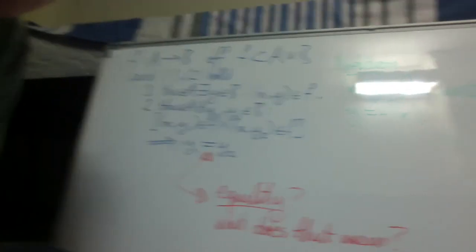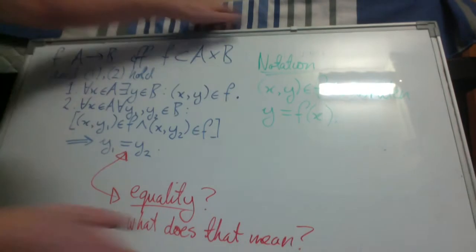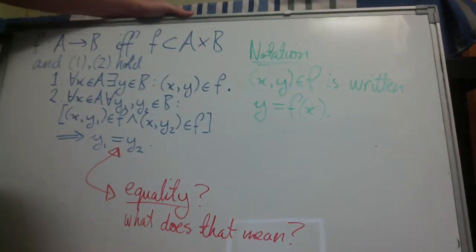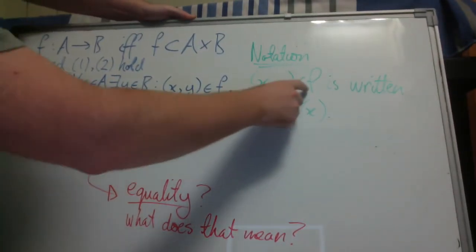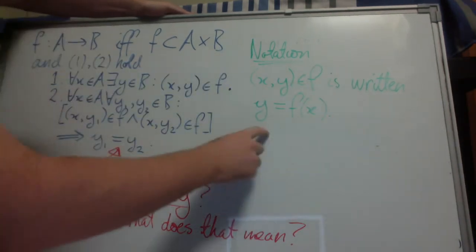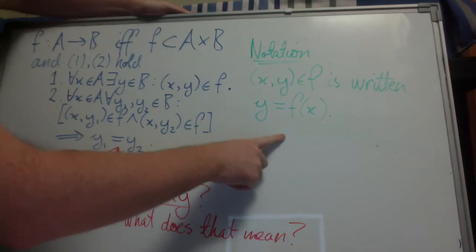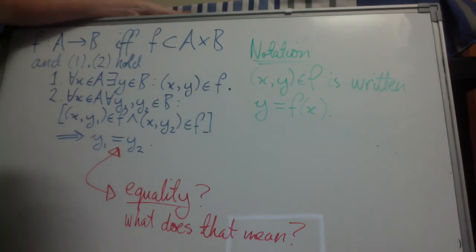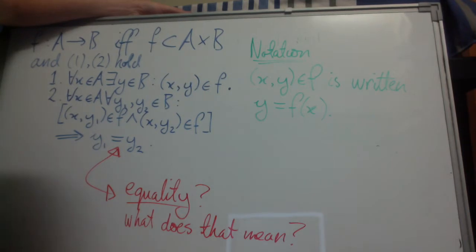Now just on notation, x comma y element of F, where F is a function, is written Y equals F of X. So you'll probably have seen that notation in high school and it's used a lot.